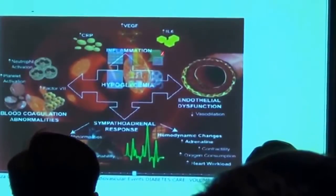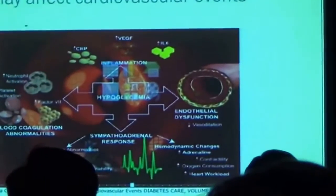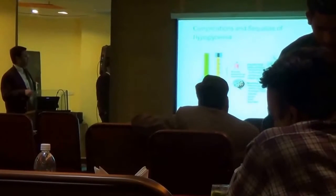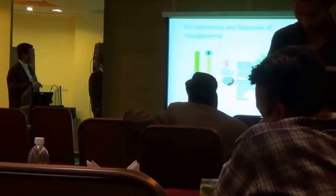We have till now talked about hyperglycemia producing CHD events. Let us talk about hypoglycemia. Hypoglycemia, through blood coagulation abnormalities, inflammation, endothelial dysfunction, and sympatho-adrenal response, produces CAD and affects the heart. Whenever there is a hypoglycemic episode, there is release of adrenaline and noradrenaline, thereby making a person prone to cardiac arrhythmia and sudden cardiac death.